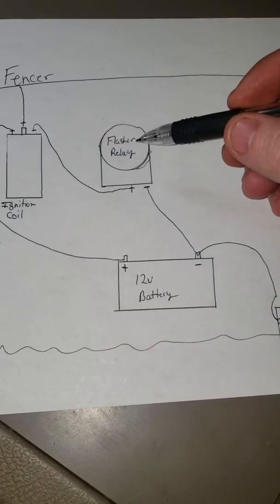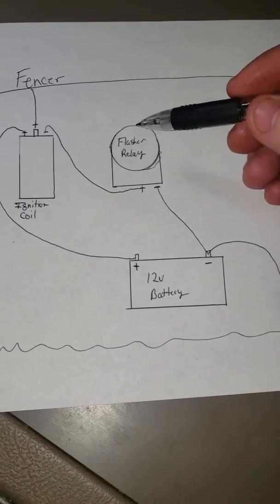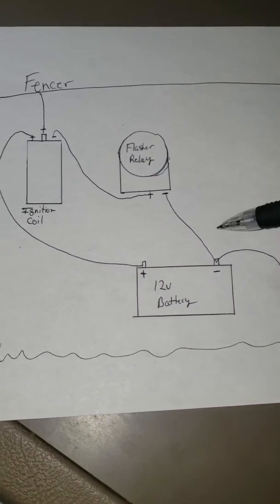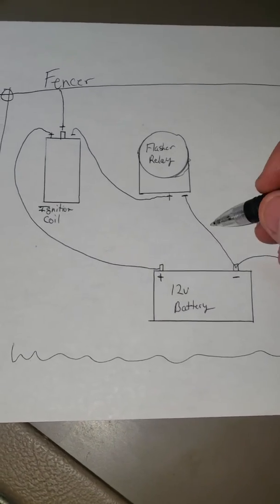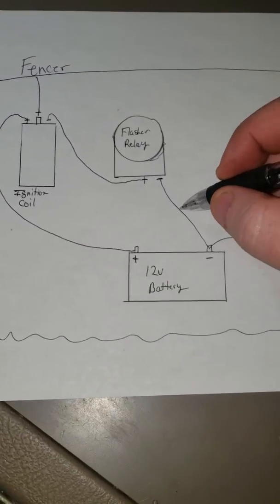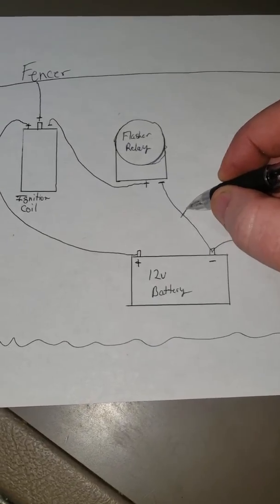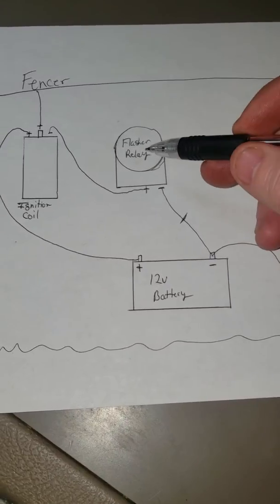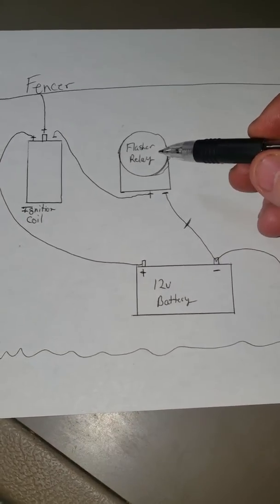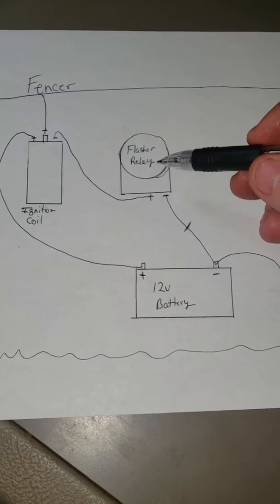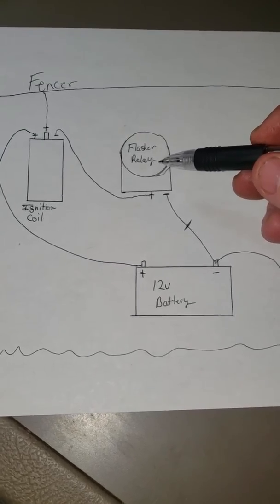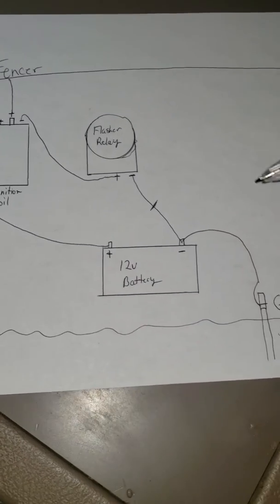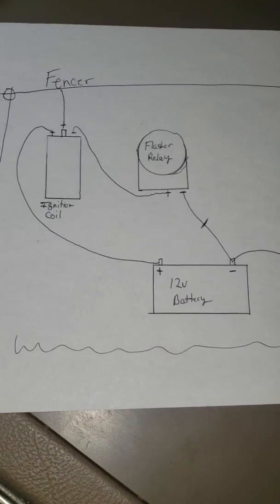Another thing is a mechanical flasher relay on this setup will run very fast. If you use a mechanical flasher relay, you have to put some kind of dial resistor in here where you can turn up resistance to make the flasher relay run slower. Or you can buy an electronic flasher relay that runs at a set pace. Anyways, thanks for watching.